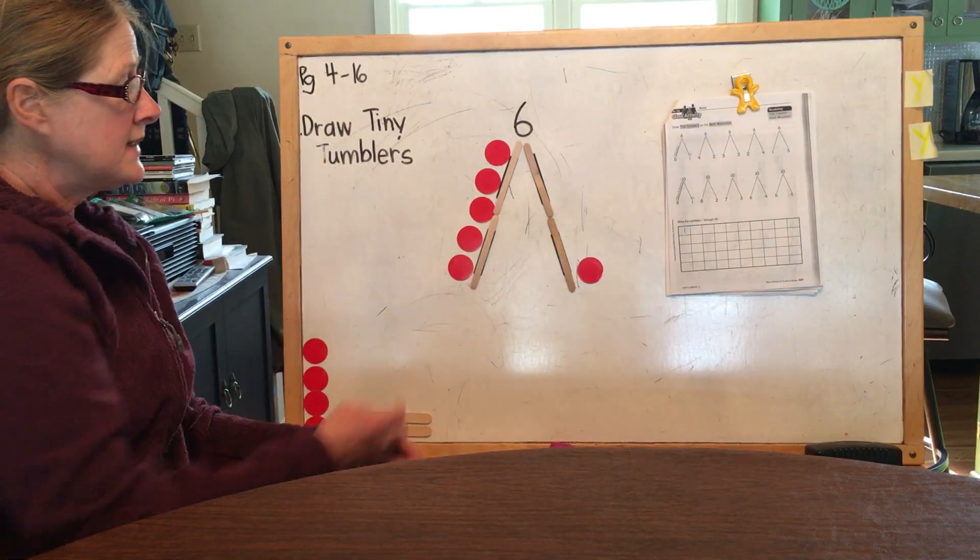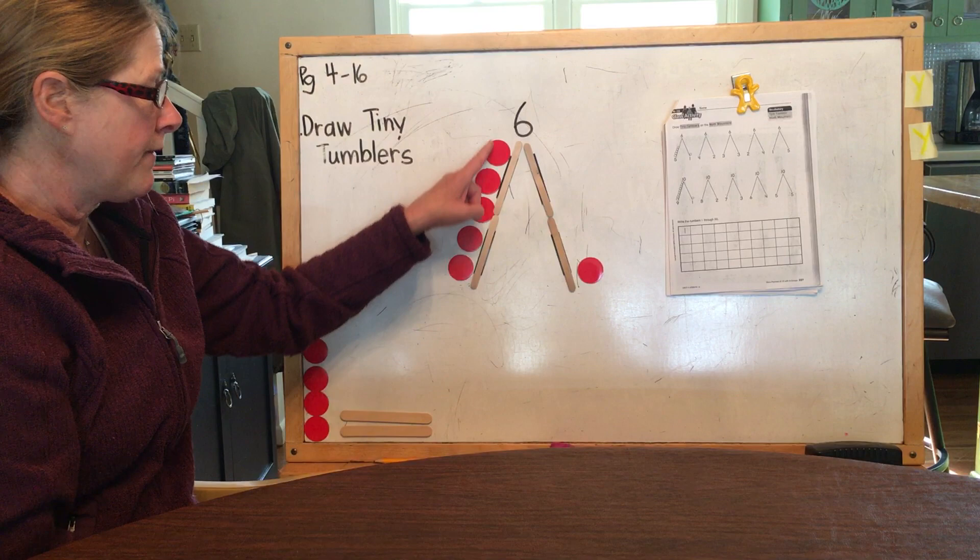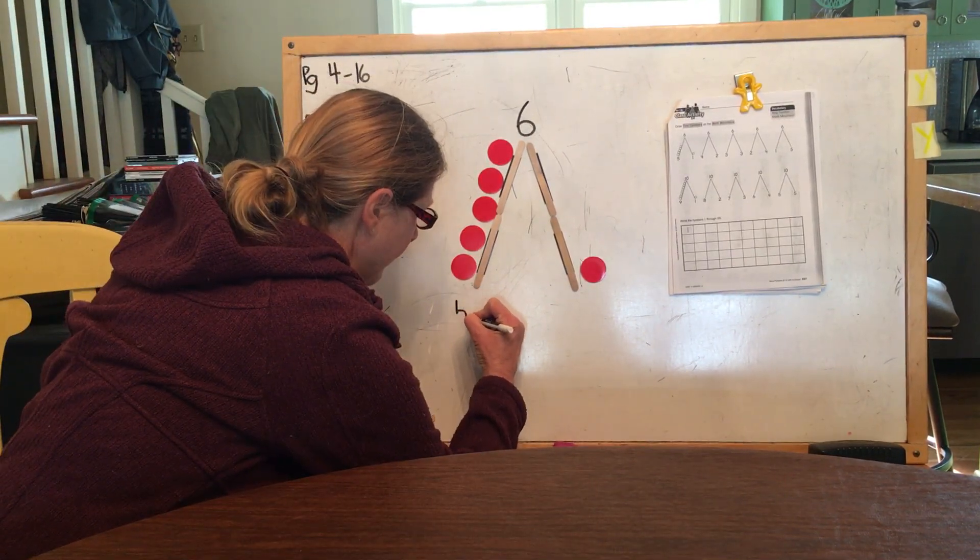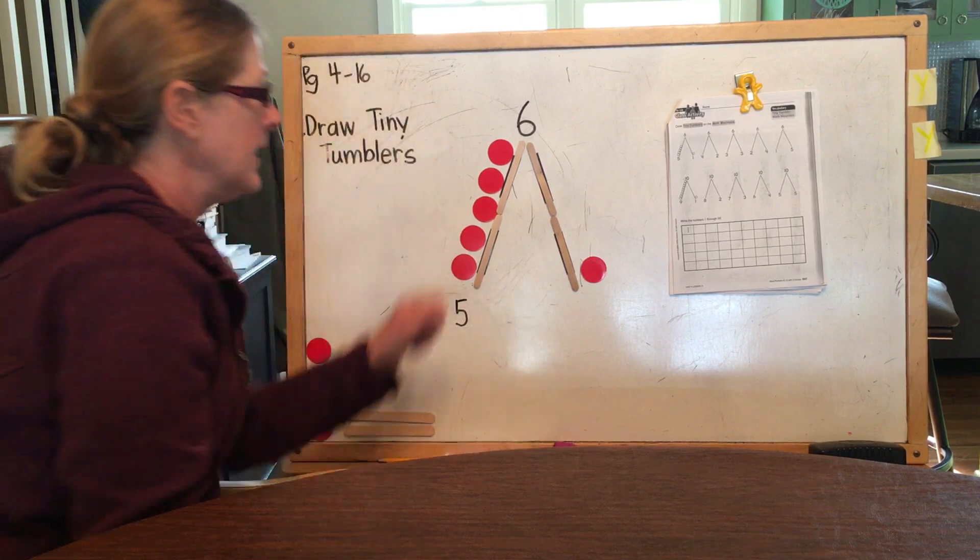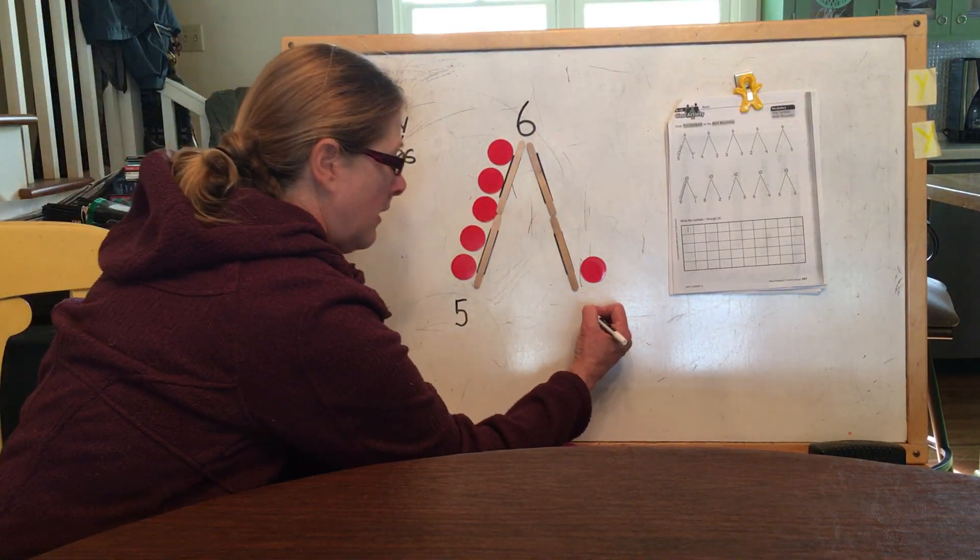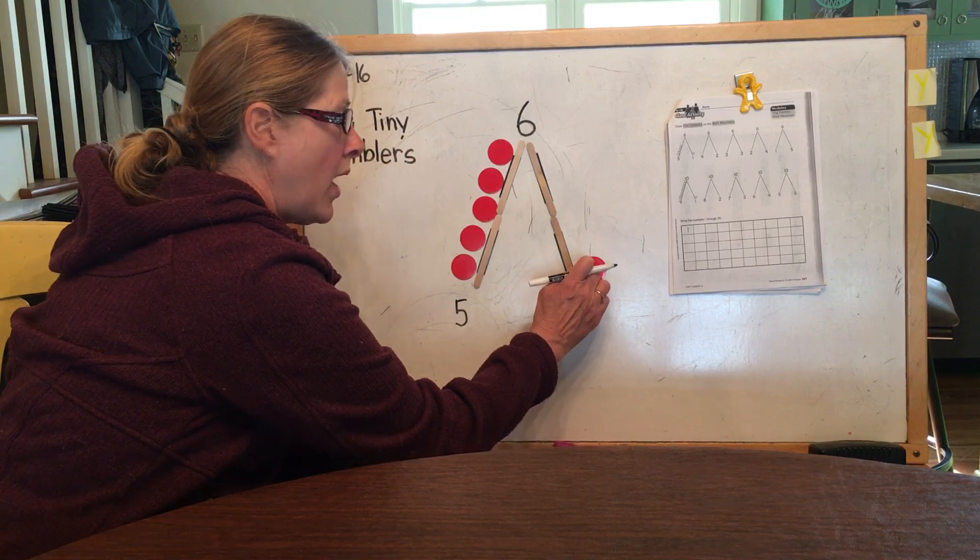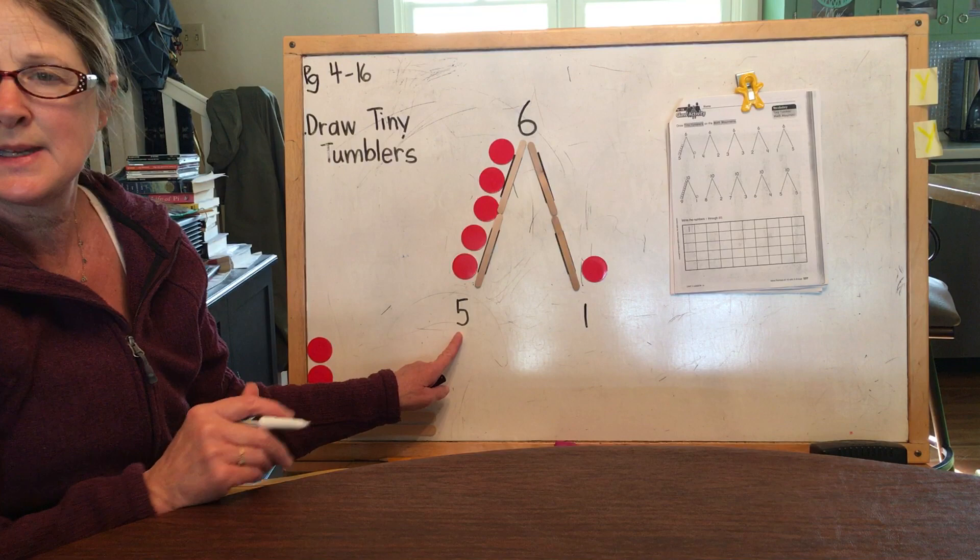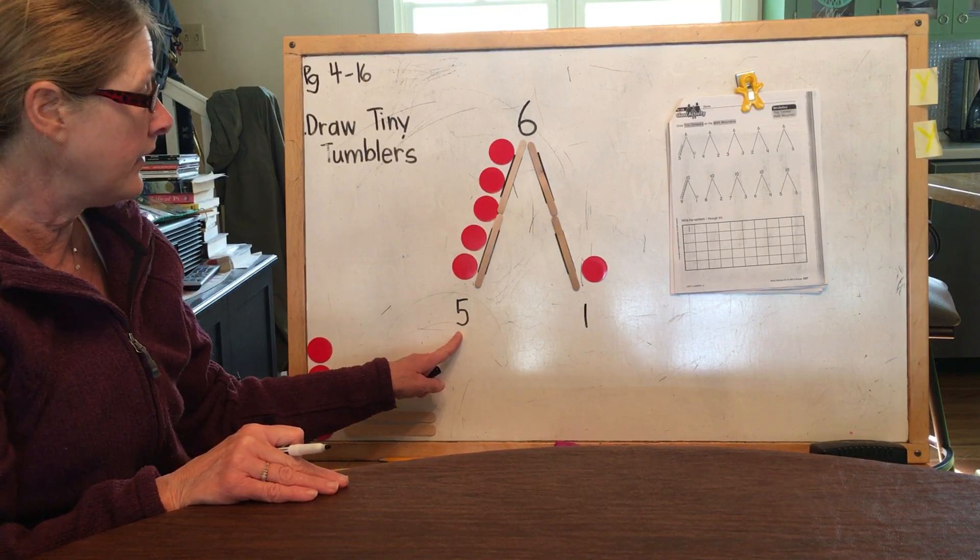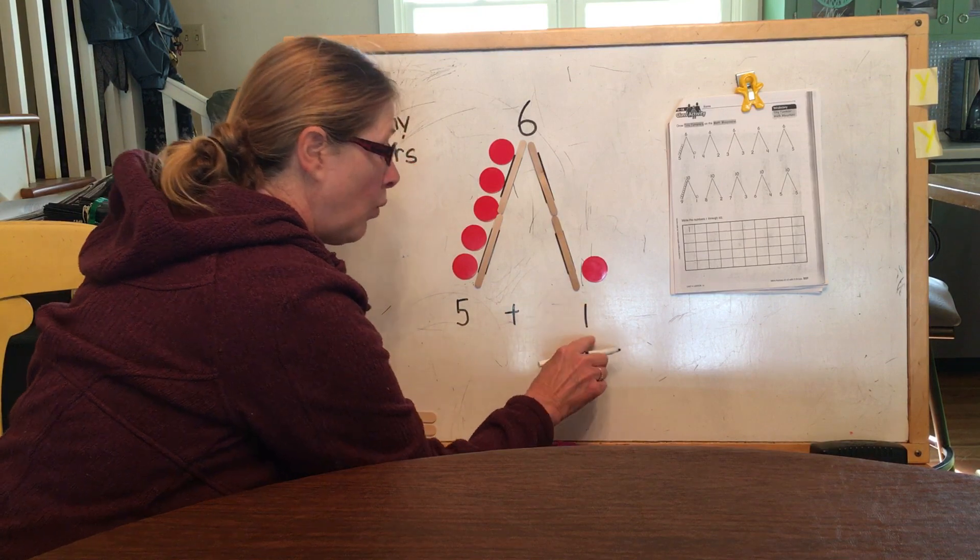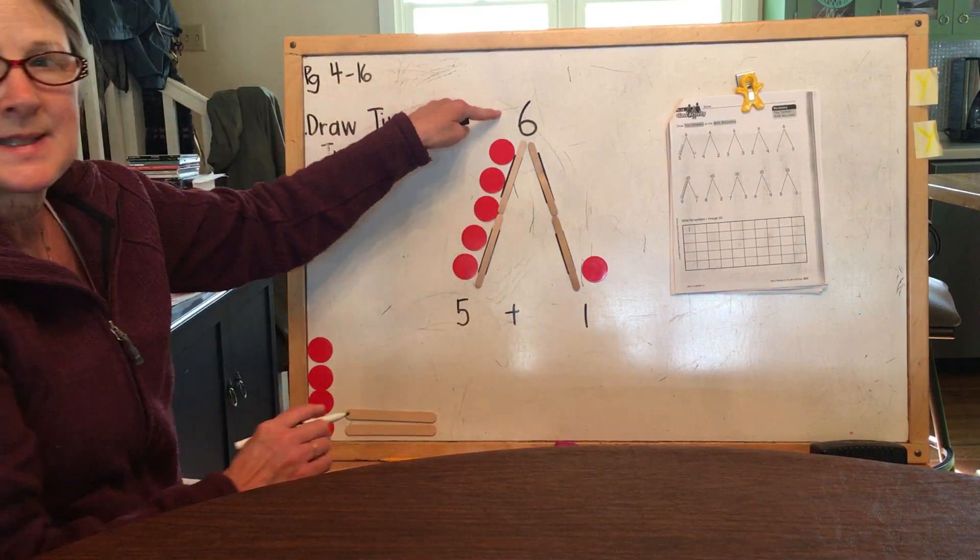So what we see is one, two, three, four, five. We name the math mountain by putting the number five at the bottom of this side and the number one on the other, because we have one tiny tumbler over here. So we could write an equation to tell the story five plus one equals six.